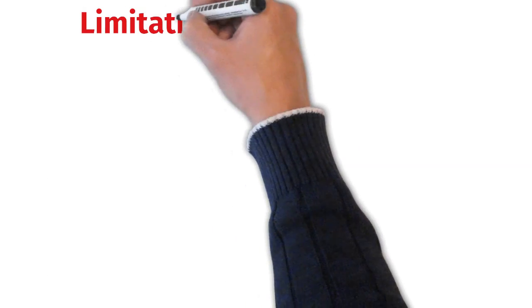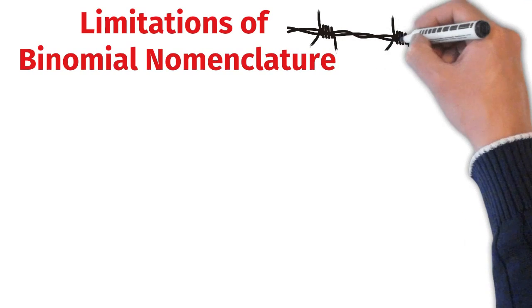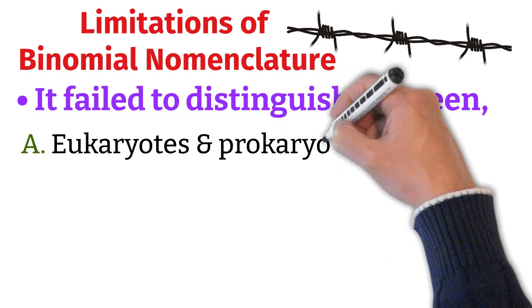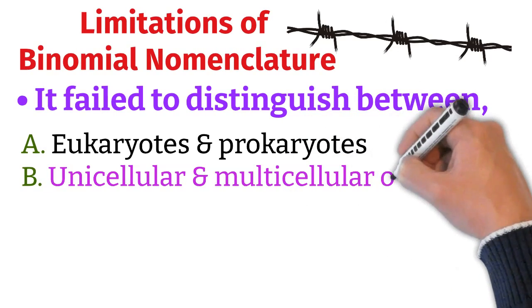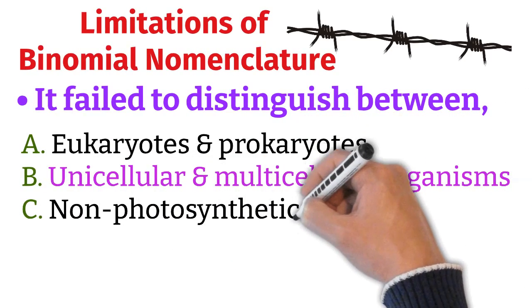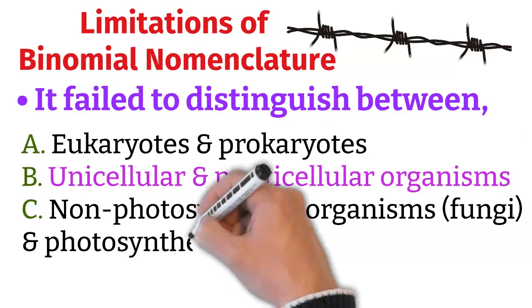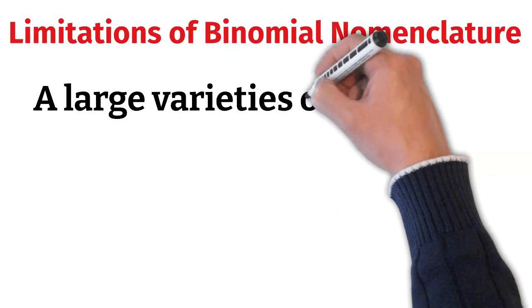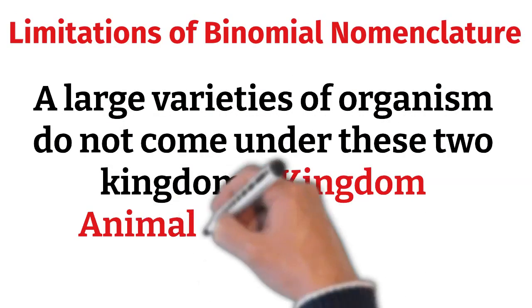Next, what are the limitations of Binomial Nomenclature? Though Binomial Nomenclature is a simple system of classification where classification is easy, it had many limitations. It failed to distinguish between the eukaryotes and prokaryotes, unicellular and multicellular organisms, and between non-photosynthetic organisms like fungi and photosynthetic organisms like green algae. Also, large varieties of organisms do not come under these two kingdoms.